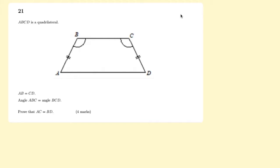ABCD is a quadrilateral, and here we have the diagram. It says AB equals CD. And angle ABC equals angle BCD. This angle equals this angle, and that's all marked in on the diagram.